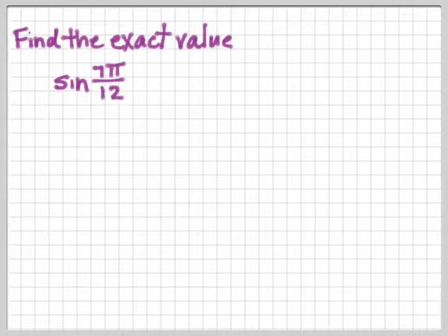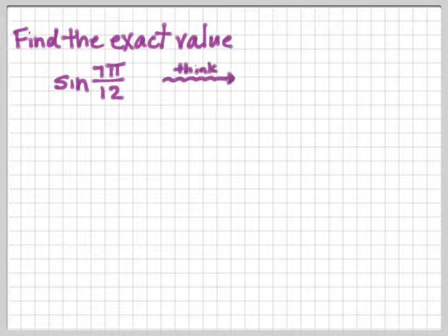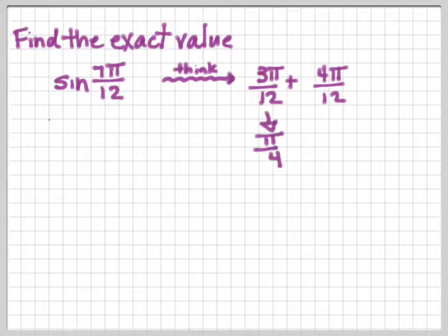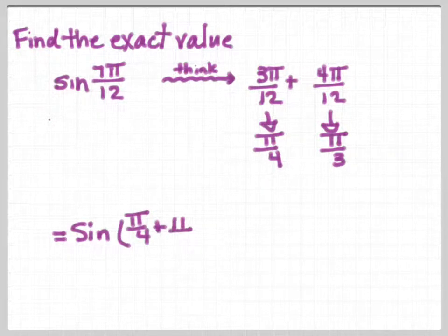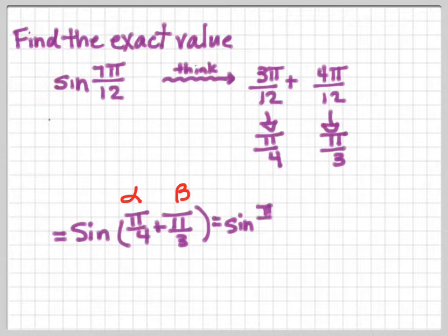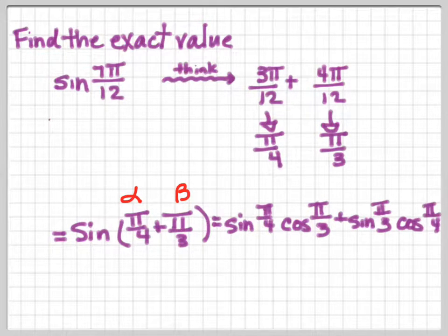Find the exact value of sine of 7π/12. We don't know the exact value of 7π/12 without a calculator, but we can think of it this way: 7π/12 is 3π/12 plus 4π/12. And 3π/12 is π/4, and we know the exact value of that. And 4π/12 is π/3, and we know the exact value of that. So we change this to sine of (π/4 + π/3), where alpha is π/4 and beta is π/3. This gives us sine(π/4) times cosine(π/3) plus sine(π/3) times cosine(π/4).